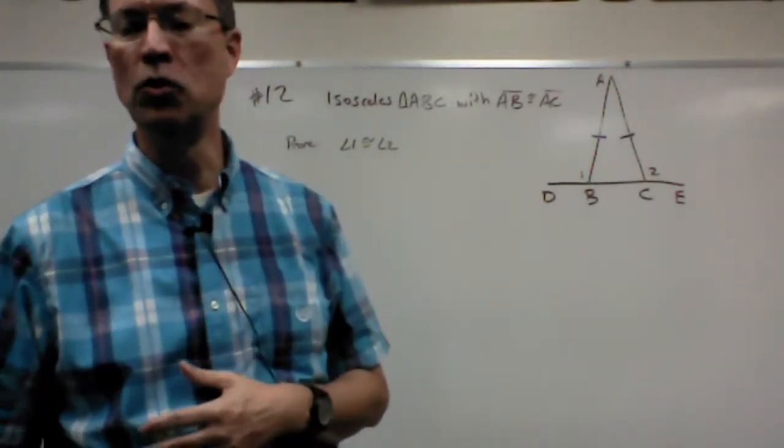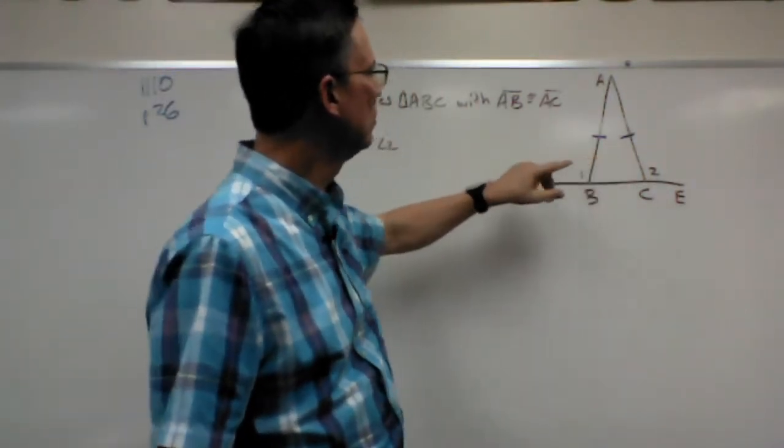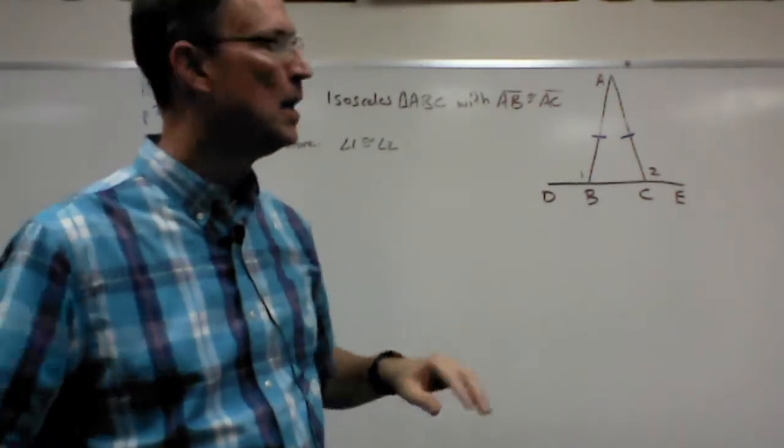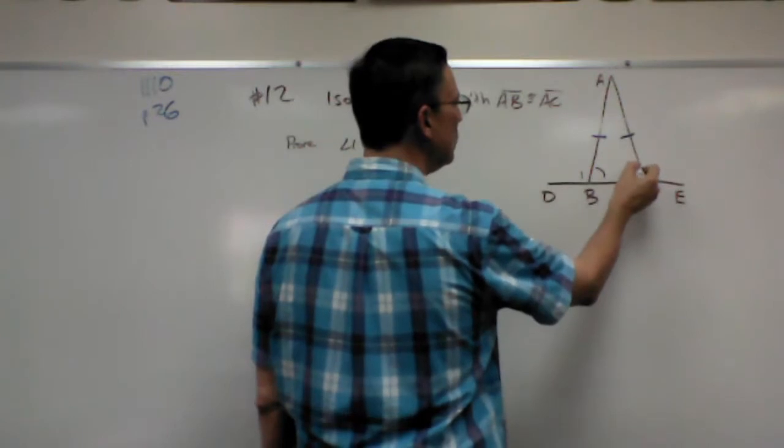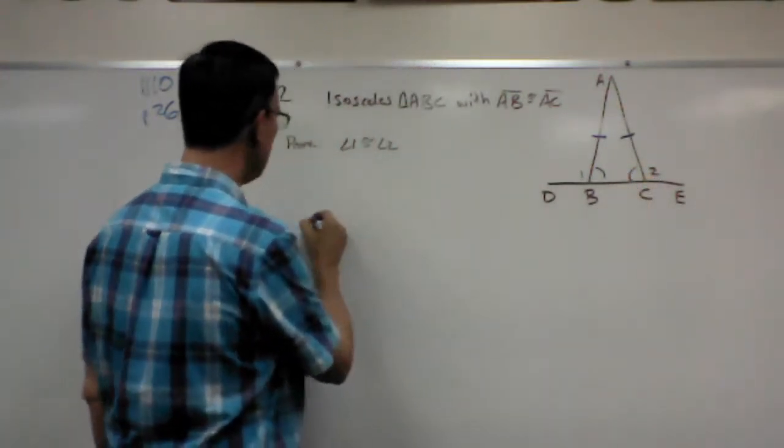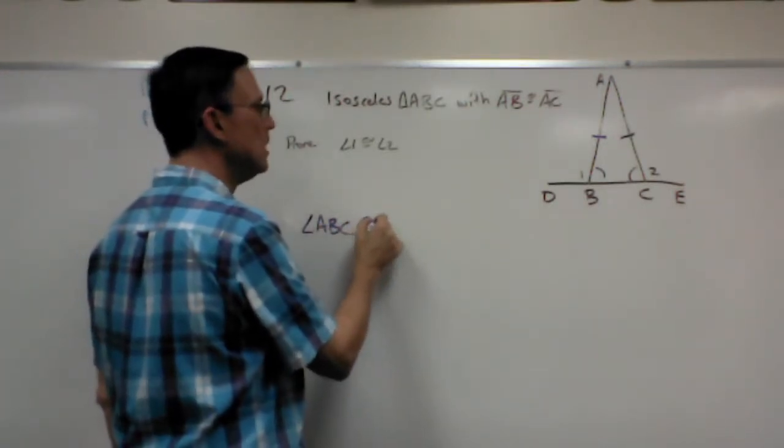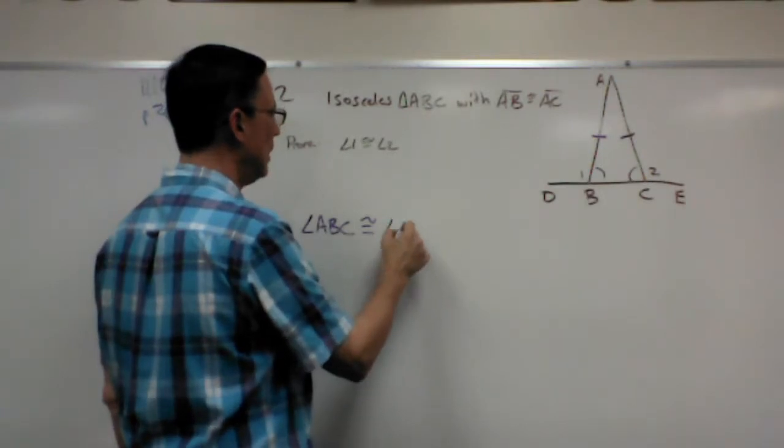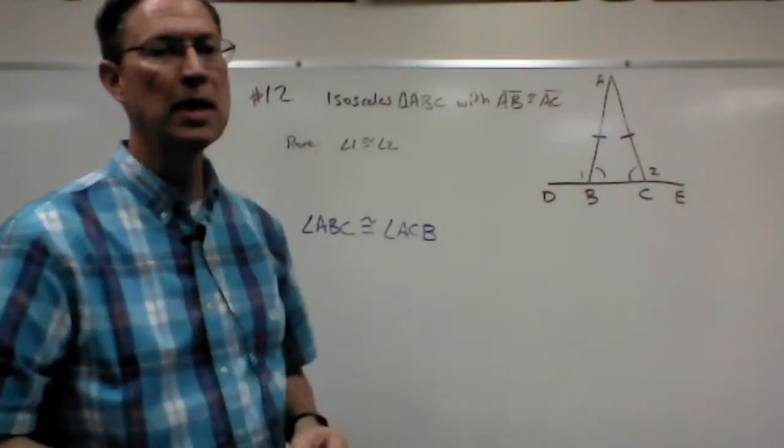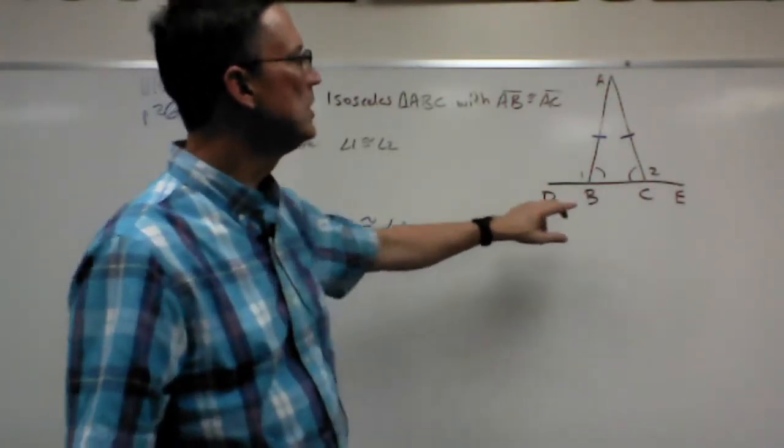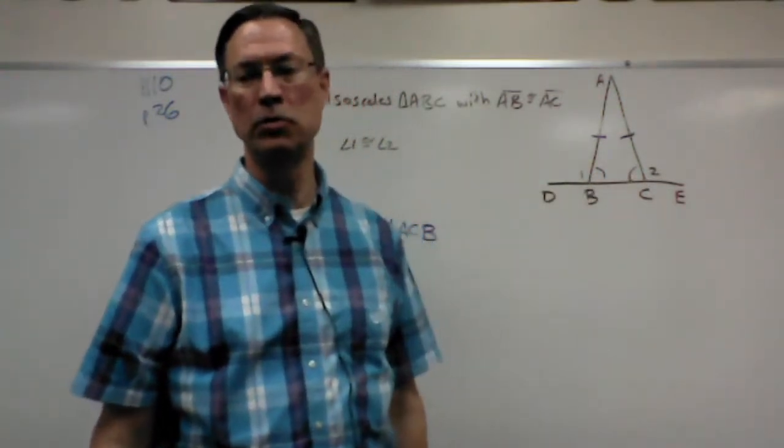So step two, if I know these two sides are congruent and they told me it's isosceles, can I with confidence say that this angle is congruent to this angle? So that'd be like saying angle ABC is congruent to angle ACB. Can I say that with confidence? And the answer is yes. If these two sides are congruent, then the angles opposite those two sides are congruent.